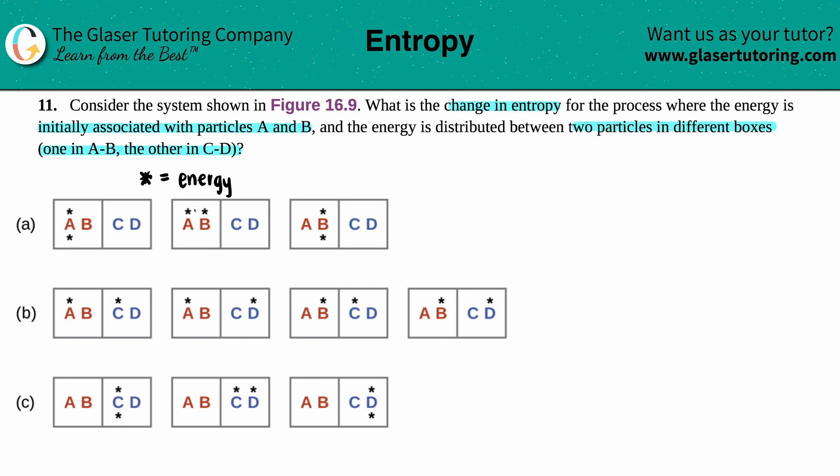Now we want to find out the change in entropy. The change in entropy, any change is a delta, it's a triangle, and entropy is S. We're talking about randomness and probability. Are we going from something that's lower probability to higher probability or vice versa? So the equation that we're going to use is delta S equals k times the ln of Wf divided by Wi.